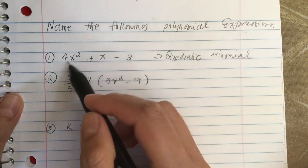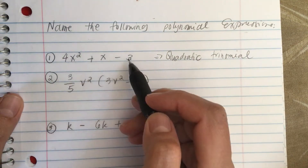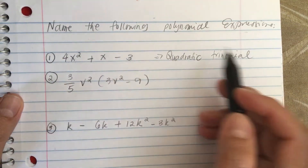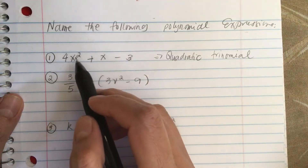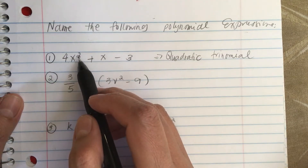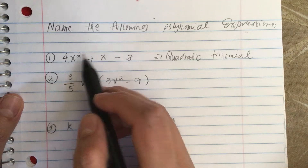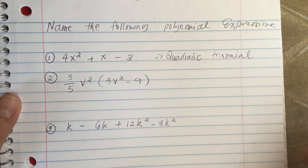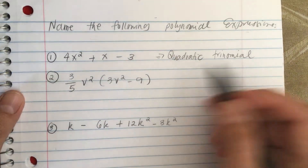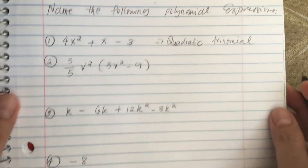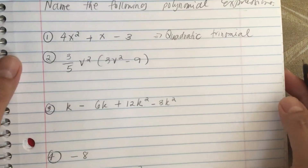There are 3 terms, so trinomial. And the highest power of the variable is 2, so it is a quadratic trinomial.